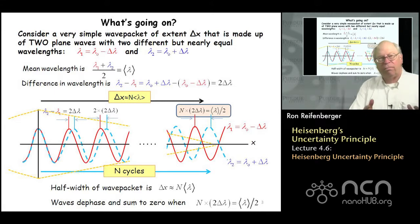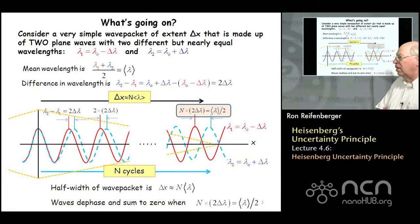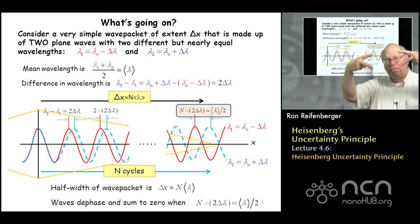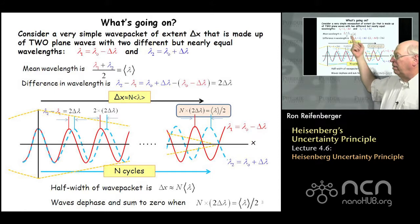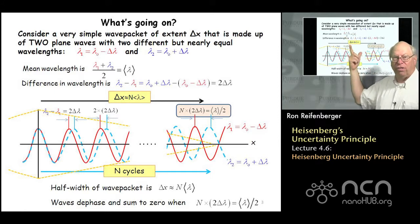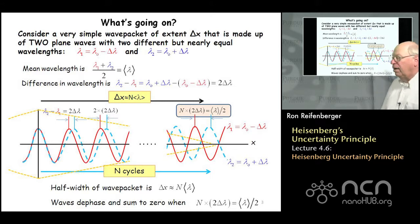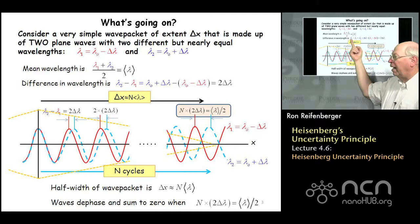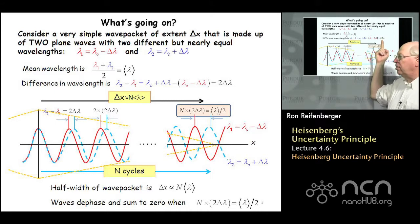We can make some formal definitions useful in this discussion. We can define a mean wavelength — we'll call that lambda with pointed brackets — as the average: lambda 1 plus lambda 2 divided by 2. We can also describe the difference in wavelength between the red and blue waves, which is lambda 2 minus lambda 1, and that works out to 2 times delta lambda.